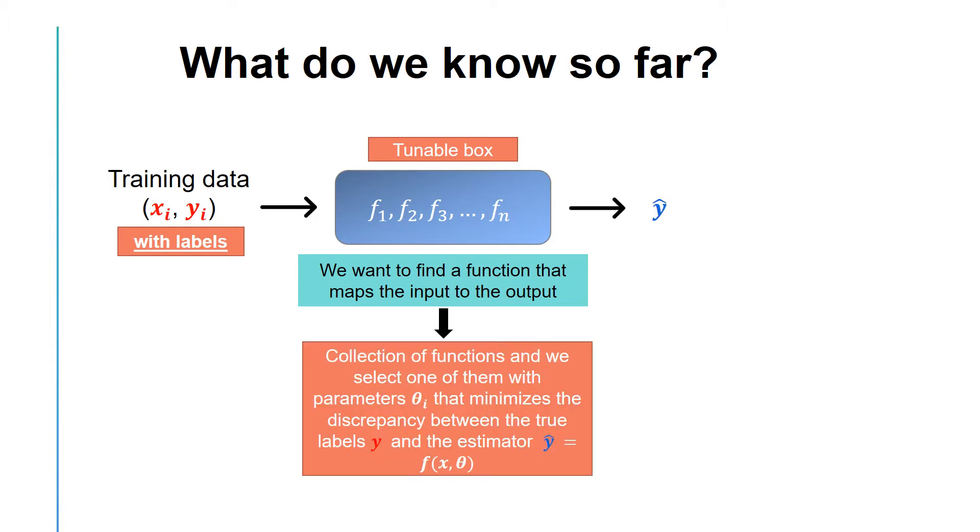This means that from the collection of possible tunable functions, we will select the function with parameters theta i to minimize the training error. If we have m training examples, the training error for a regression problem can be defined as the average sum of the squared discrepancies between the true labels and the output y-hat for the selected function.